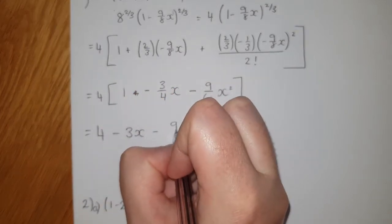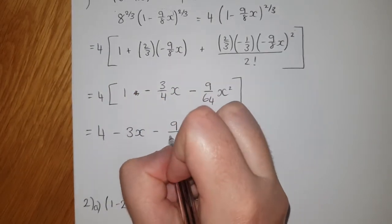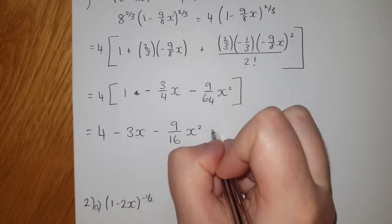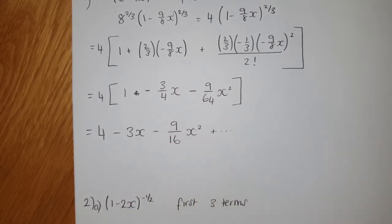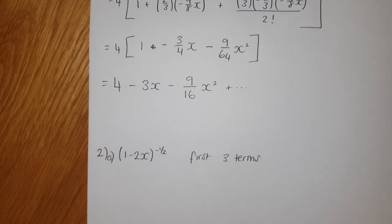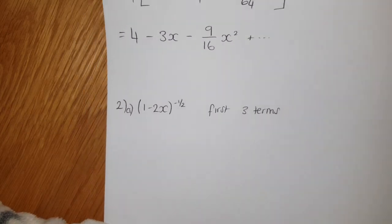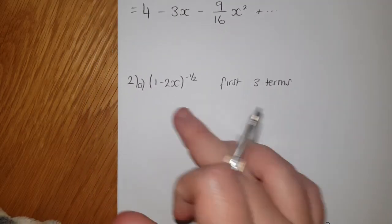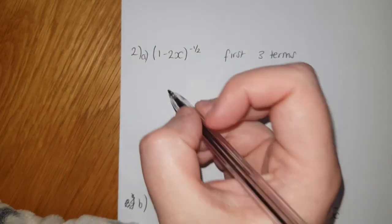Next one. Now this one's slightly easier in that it's already in the format we need in the (1+x). So we get 1 plus n is -1/2, x this time is -2x because remember it's all of that term.